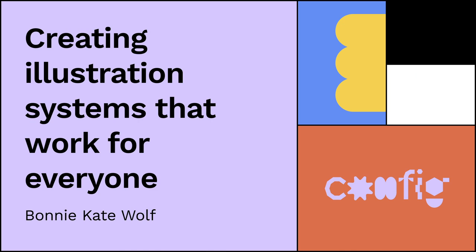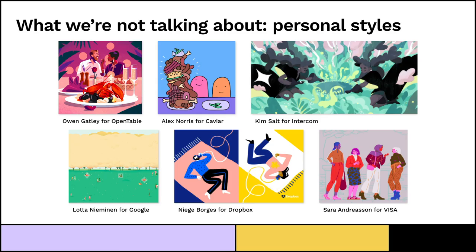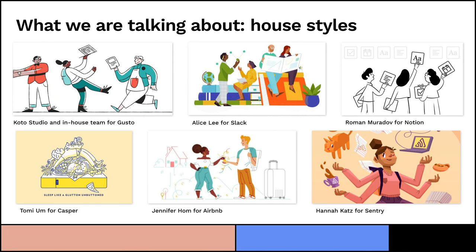Let's talk about the landscape of illustration. When I say illustration, that means a lot of things. What we're not talking about today are personal styles — for example, Caviar hires Alex Norris, those happy little guys with a pile of meat, to design an email campaign. Alex Norris produces something awesome, they use it for the email, and then they're done with Alex Norris for that campaign. Today we're not talking about getting an amazing illustrator like that. We're talking about what happens when a company needs a house style — not the style of that illustrator, but a style developed specifically for that company.